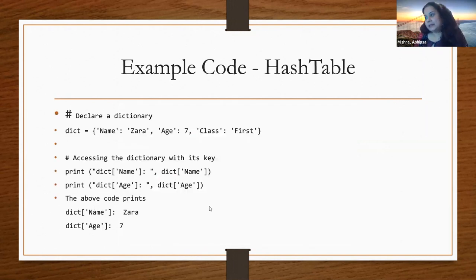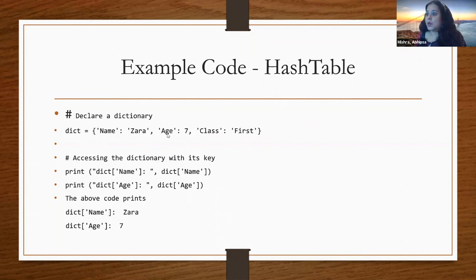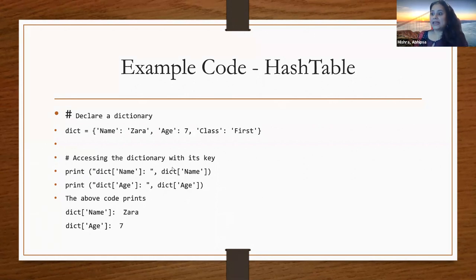In Java, you have HashMap as the data structure for storing things in a hash table. In Python, we use a dictionary. The dictionary is declared with key-value pairs — for example, name: Zara, age: 7, class: first. When we want to access elements in the dictionary, we do dict['name'] to get Zara, dict['age'] to get 7, and dict['class'] to get first.